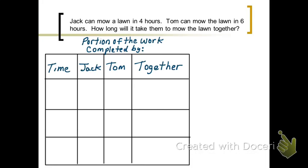So first of all, after one hour, let's talk about what portion of the work Jack has done. If it takes Jack 4 hours, what fraction of the work has he done after one hour? Well that would be one-fourth of the work. Since it takes him 4 hours, in one hour he will have done one-fourth. Of course Tom would have done one-sixth of the work since it takes him 6 hours to do the work.